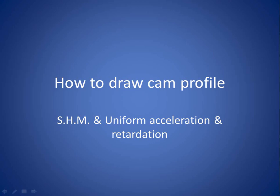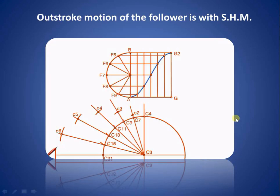Let us try to understand how to draw a cam profile. We have considered two cases: in the first case we have considered simple harmonic motion, and in the second case we have considered uniform acceleration and retardation of the cam displacement. We have considered only one particular stroke, that is the outstroke of the cam and follower system. The follower can move with uniform velocity, simple harmonic motion, uniform acceleration and retardation, or cycloidal motion.